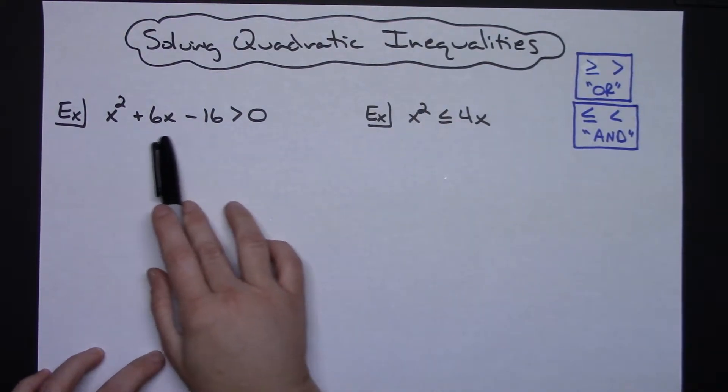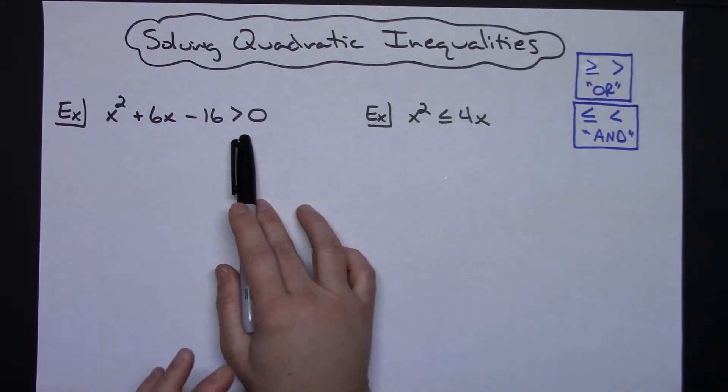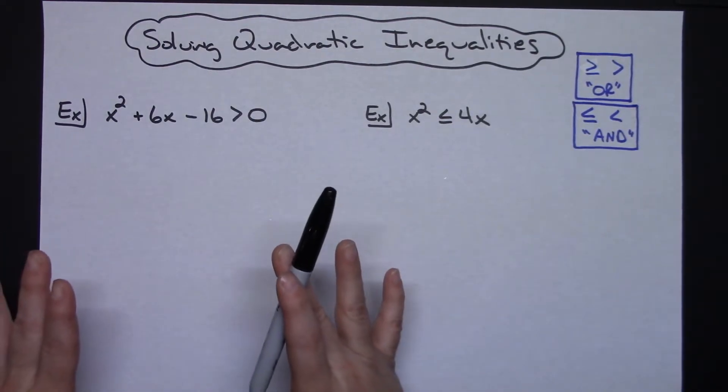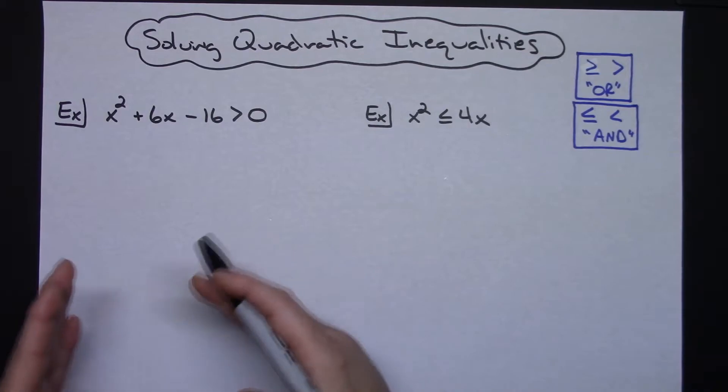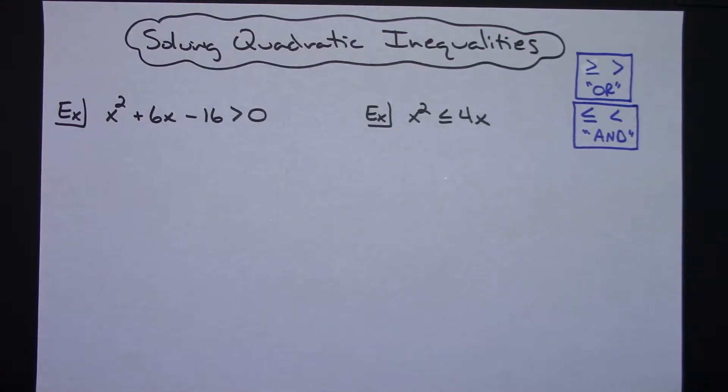First I'm going to take this first example. I'm going to solve it algebraically, place it on a number line, take a look at what we really have, and then we'll write our answer in interval notation, and then we'll verify it by looking at a rough little sketch of this quadratic.